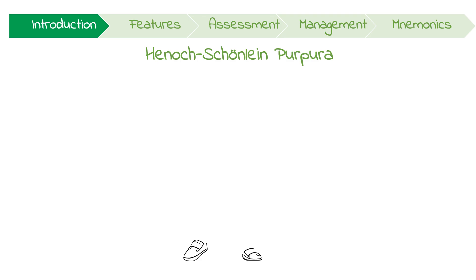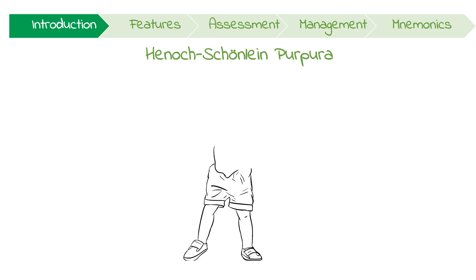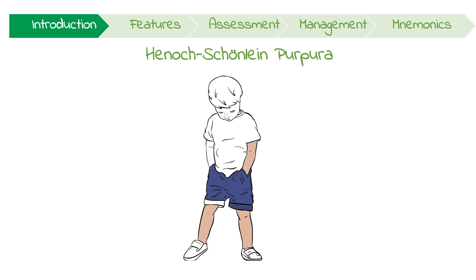Henoch-Schönlein Purpura is the most common vasculitis in childhood. It's usually triggered by a recent infection, resulting in an autoimmune disease involving abnormal deposition of IgA complexes. Although most cases are self-limiting, long-term complications like chronic kidney disease are important to identify and manage early.